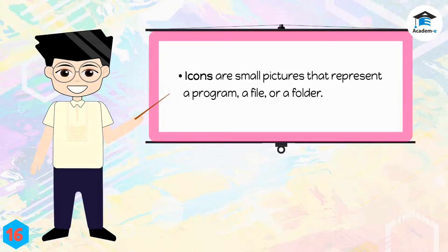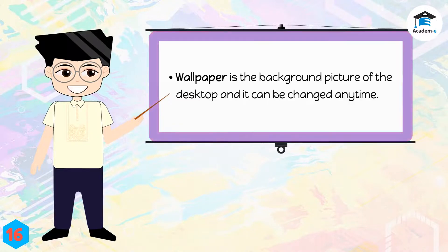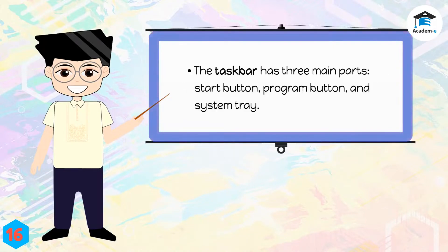Icons are small pictures that represent a program, a file, or a folder. Wallpaper is the background picture of the desktop, and it can be changed anytime. The taskbar has three main parts: start button, program button, and system tray. Thank you.